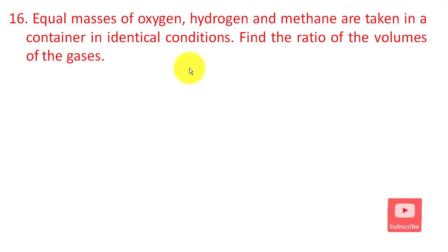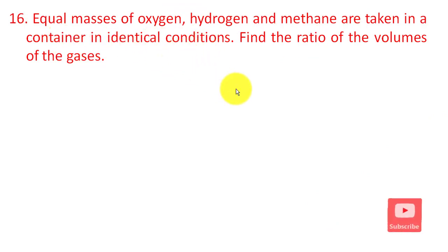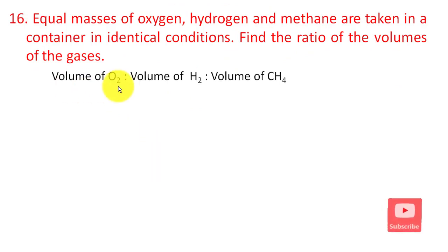The next question: equal masses of oxygen, hydrogen, and methane are taken in a container under identical conditions of temperature and pressure. Find the ratio of volumes of the gases — volume of O₂, volume of H₂, and volume of CH₄.